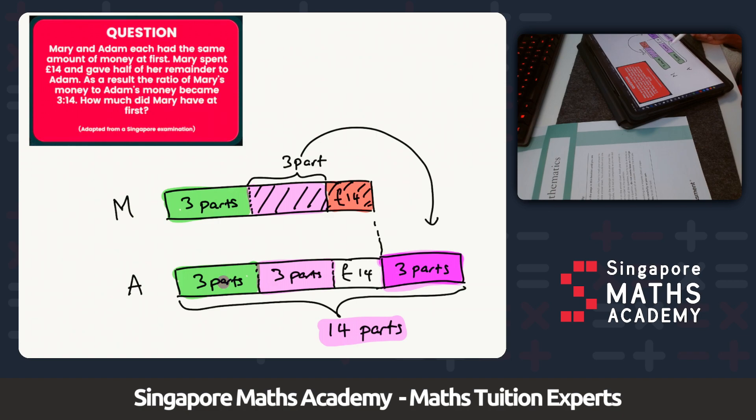I can account for three, six, nine, and that must mean that the £14, though it looks smaller, must represent 14 take away 9. That must be five parts. This must represent five parts. £14 is five parts.